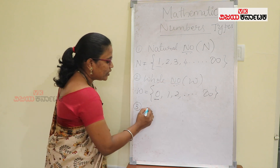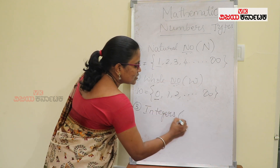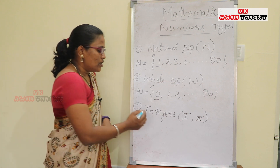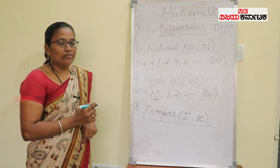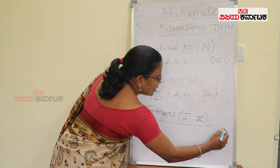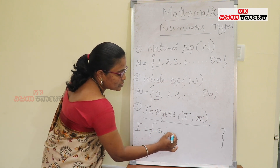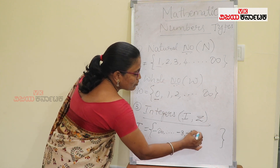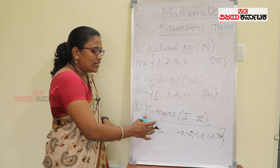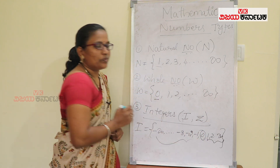Coming to the next one: integers. Integers is symbolized as either I or sometimes Z. Integers is a set of numbers. It is a set containing numbers starting from negatives — from minus infinity to minus 3, minus 2, minus 1, 0, 1, 2, and so on up to positive infinity. So the integer set means it is a set containing negative numbers, positive numbers, and 0.